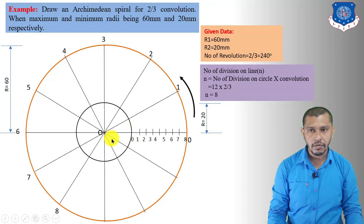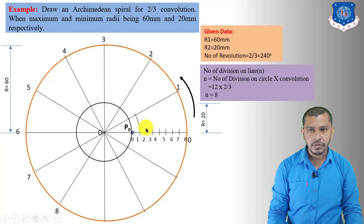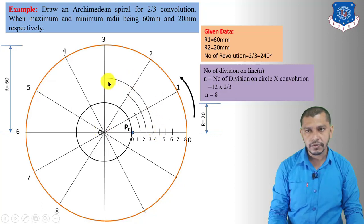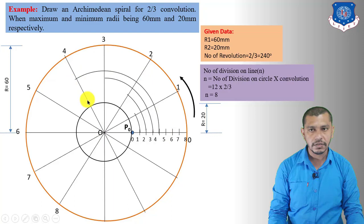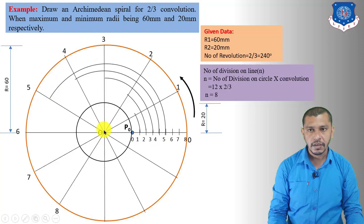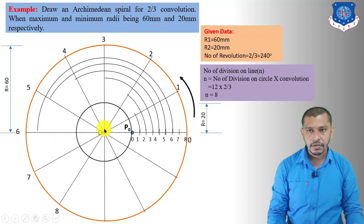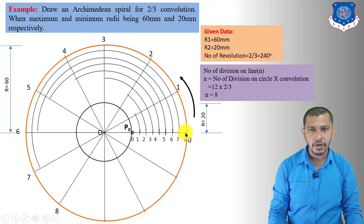Taking center O, radius O-to-1, give an arc on the first division; radius O-to-2, arc on the second division; radius O-to-3, arc on the third; O-to-4 on the fourth; O-to-5 on the fifth; O-to-6 on the sixth; O-to-7 on the seventh division. Measuring O-to-8 gives the eighth point.